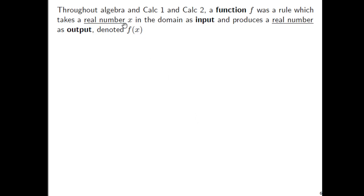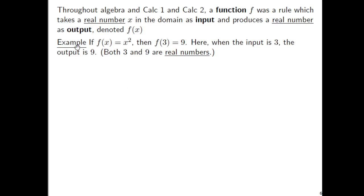So just to relate it to the past, throughout algebra and in calc 1 and calc 2, a function, let's label it f, was a rule which takes in a real number, let's call it x, as the input, and produces a real number's output, which we symbolically say is f of x. For example, if f of x equals x squared, then f of 3 is equal to 9. I'm just saying it so that we can relate it to some new things.